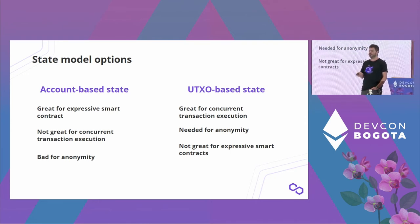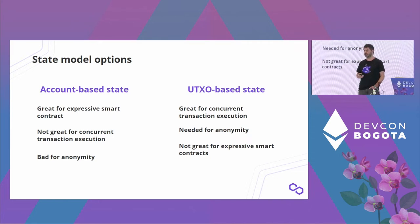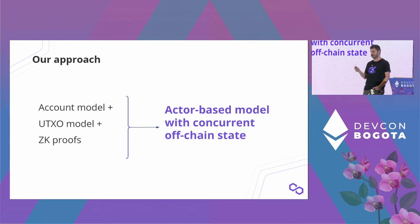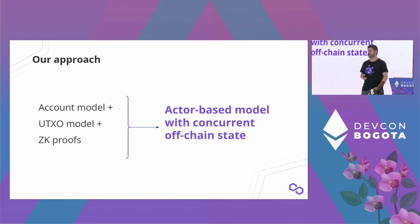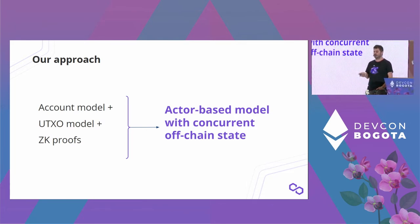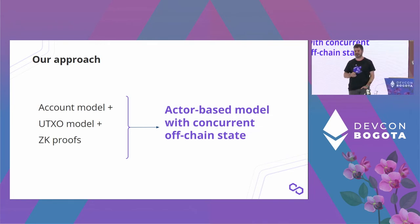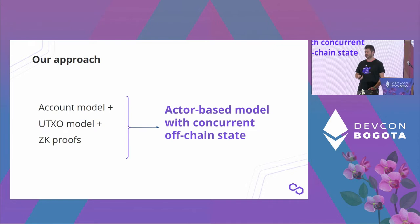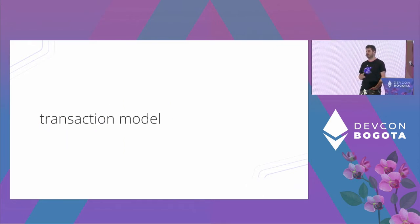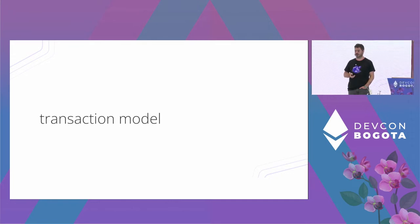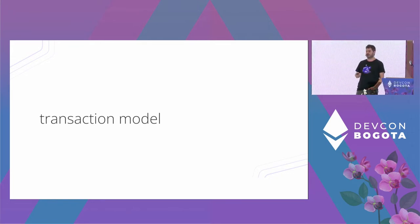What we want to do is combine the nice properties of each model into a single one. I call this the account-based plus UTXO-based model, combined with ZK proofs, giving us what I call the actor-based model with concurrent off-chain state. I'll explain what all of those terms mean in the course of this presentation.